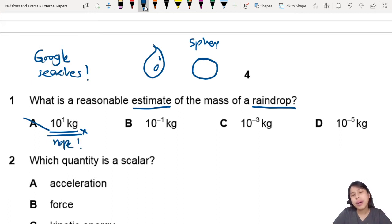10 to the negative 1, what would that be? Well, if you think of this, 1 times 10 to the negative 1, it's basically 0.1 kg, or also known as 1000 grams. That's also not correct, because that's about the weight of a fruit, like an orange, or apple, or something like that. So, you know, it's too heavy for a raindrop.